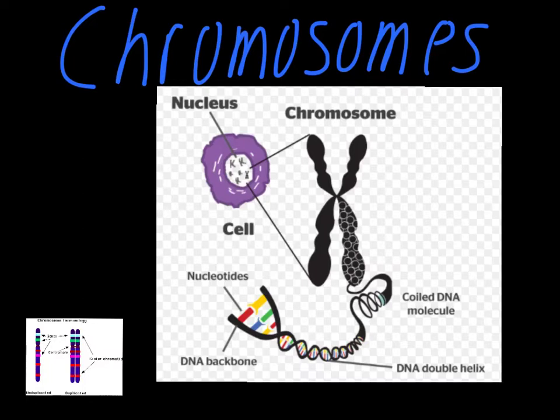Chromosomes eventually will have this X-like shape to them, although they don't right away — we'll talk about how that comes about in a minute. The most important thing to remember about chromosomes is that it's just condensed DNA. This picture shows how the DNA kind of coils up and wraps around and condenses down into these different chromosomes.